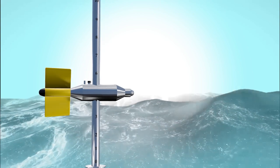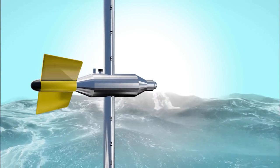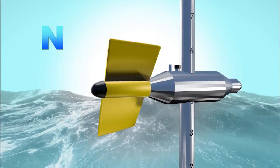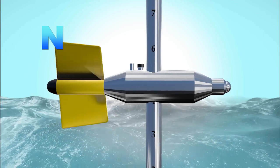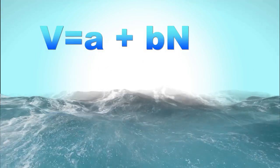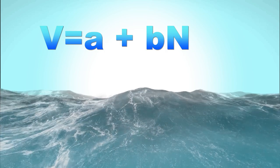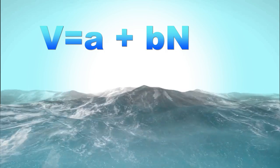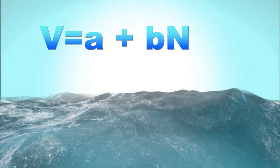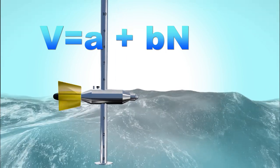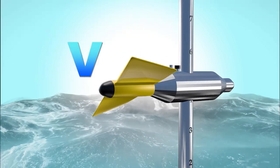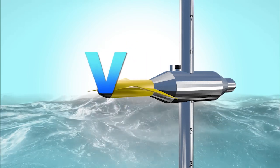The number of revolutions the propeller makes in a second is denoted by the letter N. This comes from the equation V = A + B × N, where A and B are governing constants for a particular mechanical current meter, and V stands for velocity.